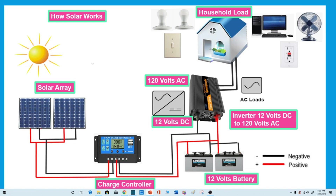Here's a step-by-step overview of how solar panels work for your home. A solar array can be defined as solar panels arranged in a group to capture the maximum amount of sunlight and convert it into usable electricity.